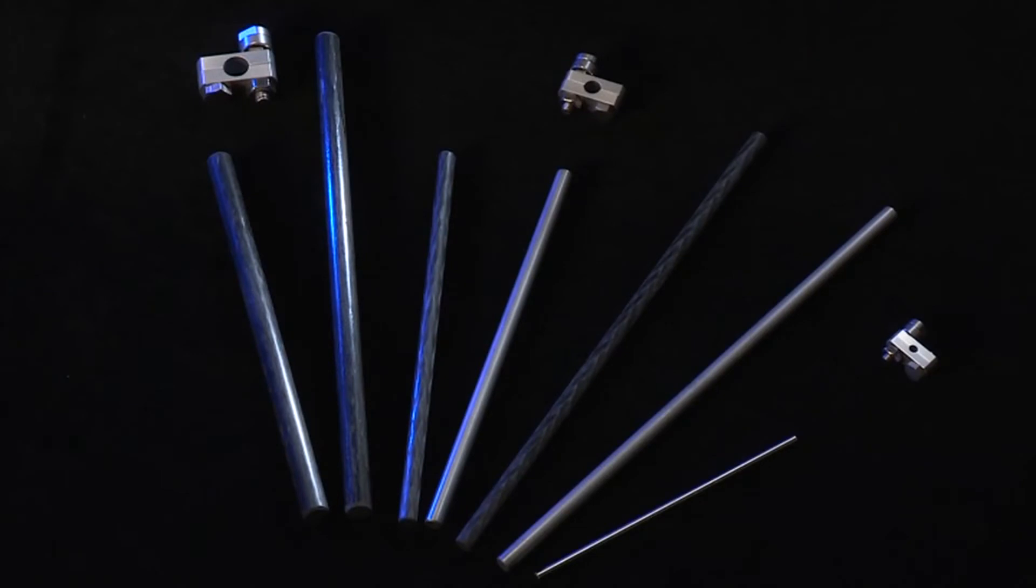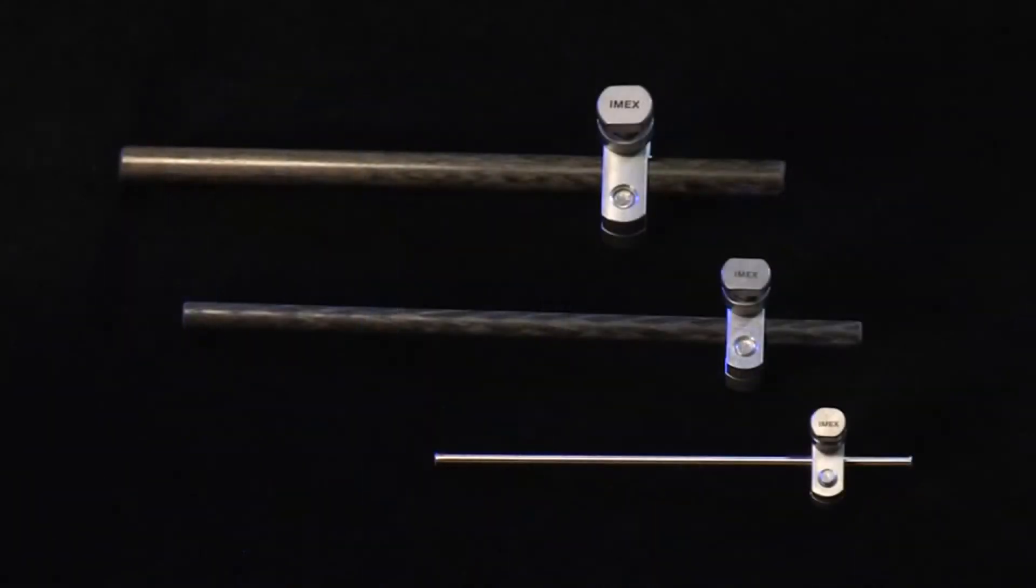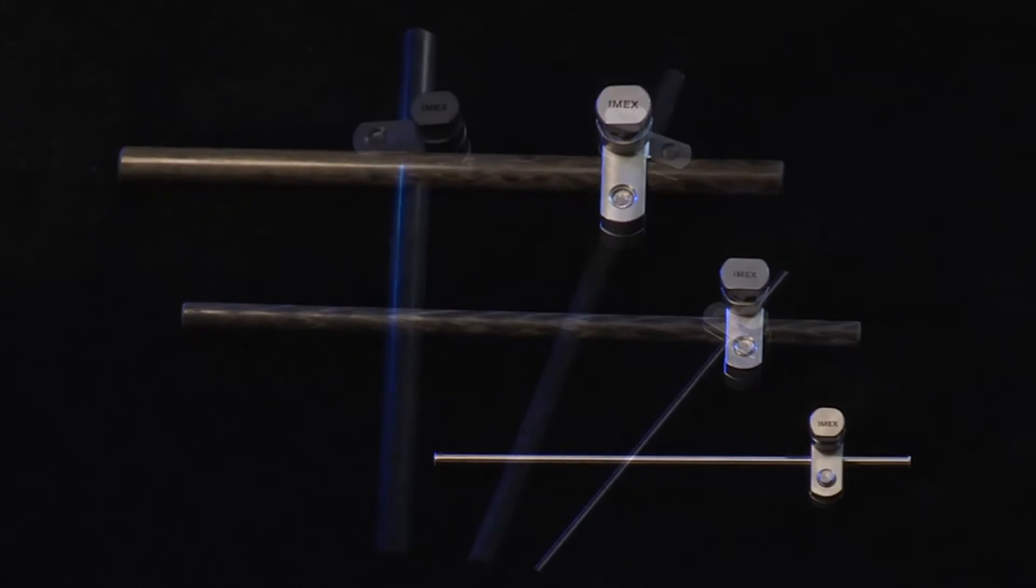The revolutionary design of the SK fixator is based upon the use of larger connecting rods made of strong lightweight materials combined with pin gripping clamps that support the use of multiple pin diameters and simplify the use of modern fixation pins.